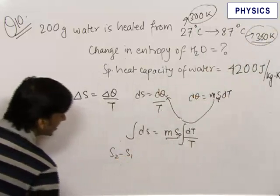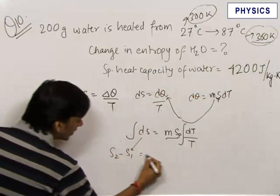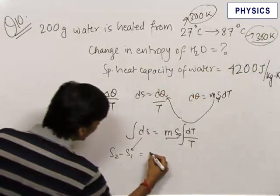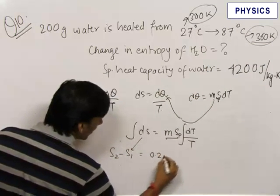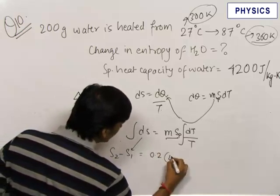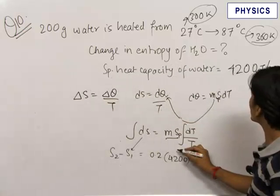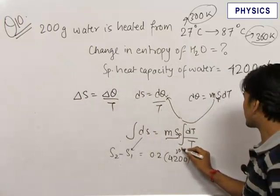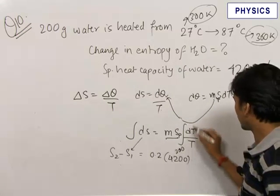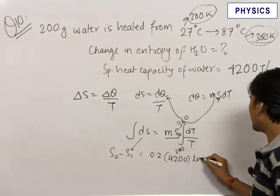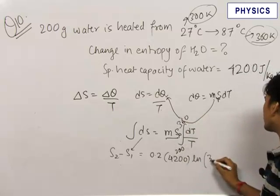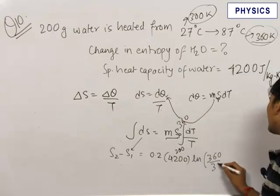This becomes S2 minus S1, that is the change in entropy. This is equal to mass of water, that is 0.2 into specific heat of water, that is 4200 into this integration goes from 300 to 360, ln of T final minus T initial, that is 360 upon 300.